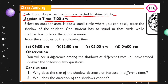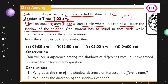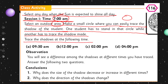Session time starts at 7 a.m. Select an outdoor area and make a small circle. One student has to stand in the circle while another traces the shadow using chalk. So at 7 a.m. when school starts, the first student stands in the circle and the second student traces their shadow on the ground with chalk.